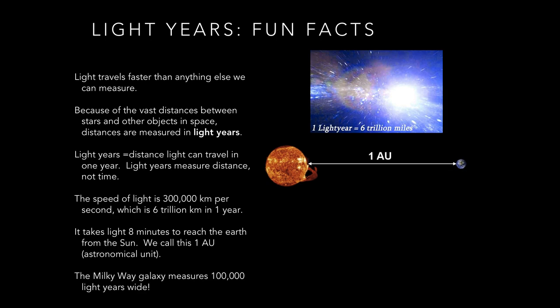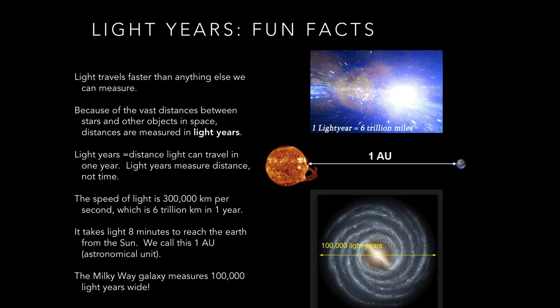This graphic on the bottom right of your screen says: the Milky Way galaxy measures 100,000 light years wide. Here's what that means: if you're on one end of the galaxy and you're traveling at the speed of light, it's going to take you 100,000 years to get across it.